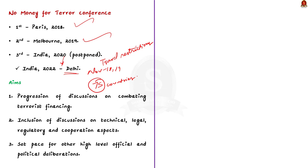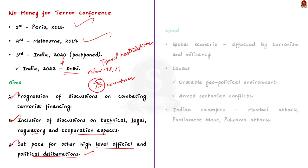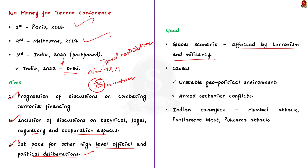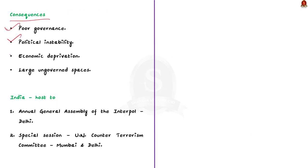The conference aims to progress discussions on combating terrorist financing from the previous two conferences in Paris and Melbourne. It also intends to include discussions on technical, legal, regulatory, and cooperation aspects of all facets of terrorism financing. It attempts to set the pace for other high-level deliberations focused on countering terrorist financing. Globally, countries have been affected by terrorism due to disorderly geopolitical environments and armed sectarian conflicts. India has also faced terrorist attacks — the 2008 Mumbai attack, 2002 Parliament blast, 2019 Pulwama attack — with consequences including poor governance, political instability, and economic deprivation.